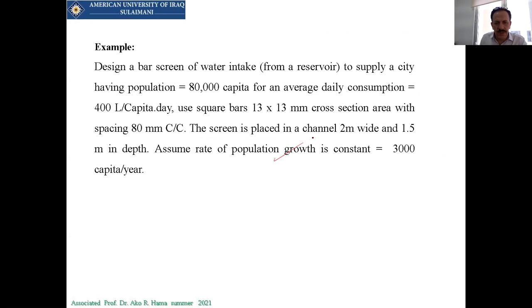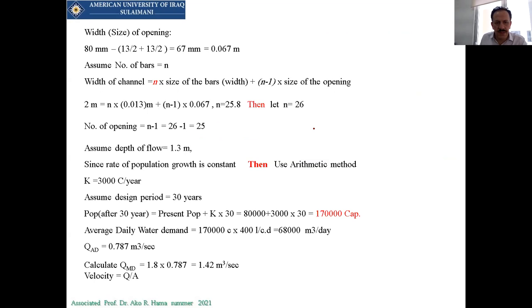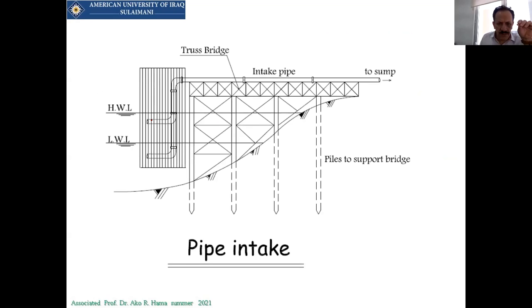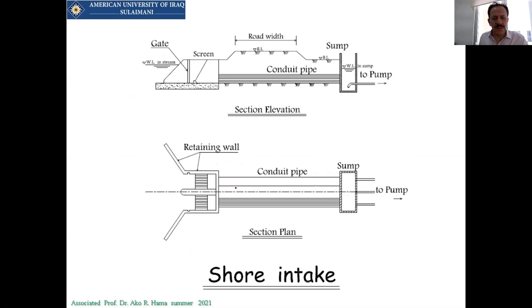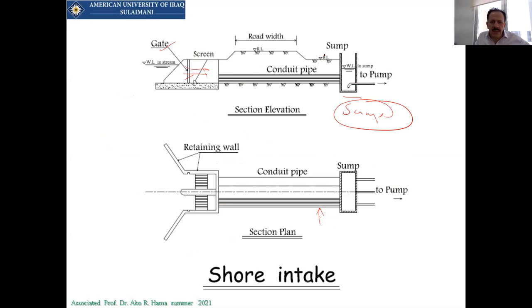We solved this example showing the space between the parts. Here is the pipe intake structure. There will be a pipe here, a high water level, and a low water level. In the previous homework you saw a screen gate with water coming in. This is called a sump. There is a bottom level, a water level in the stream, and a water level in the sump.